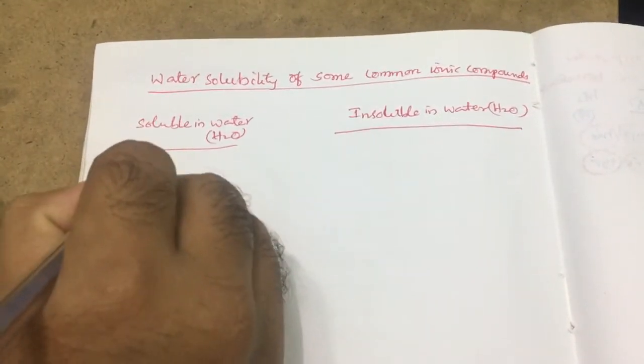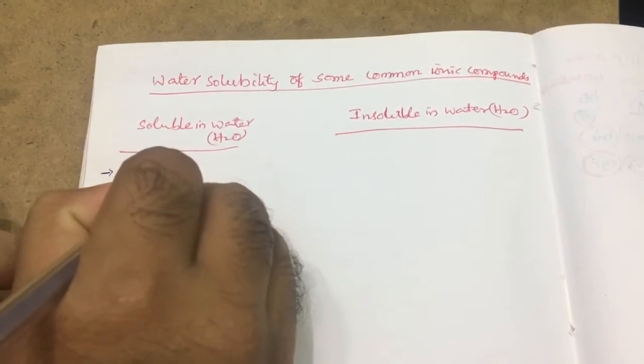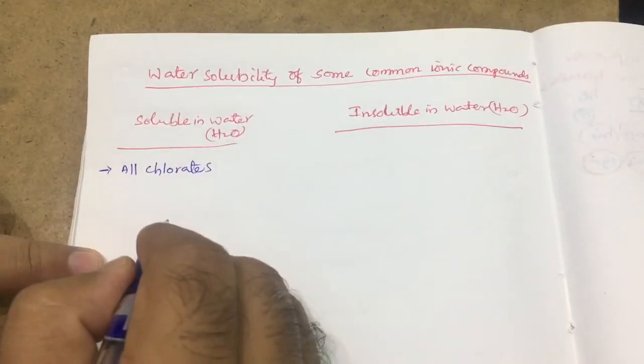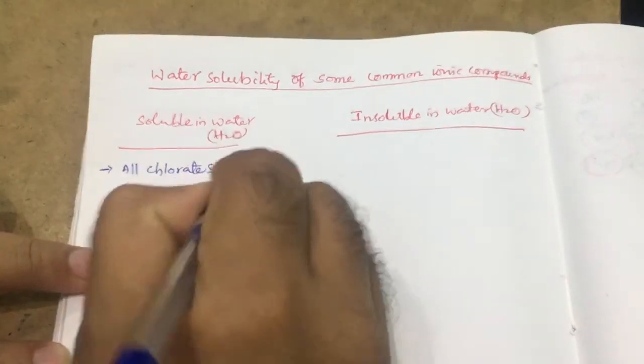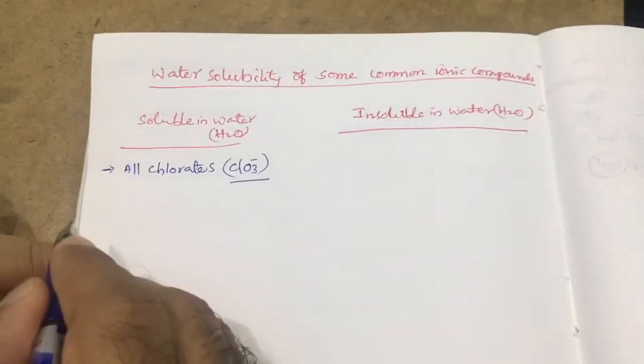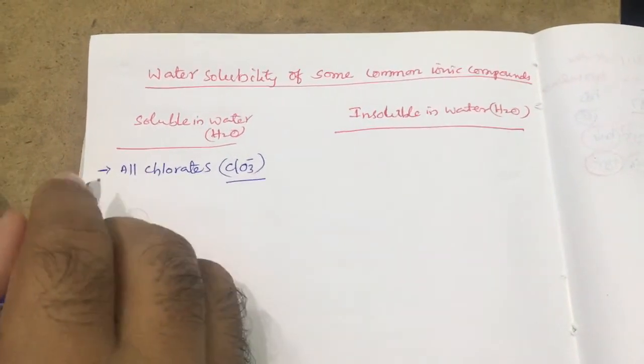All chlorides are soluble. Chloride form ion is ClO3 minus. Along with this, any positive charge is there, that is soluble.